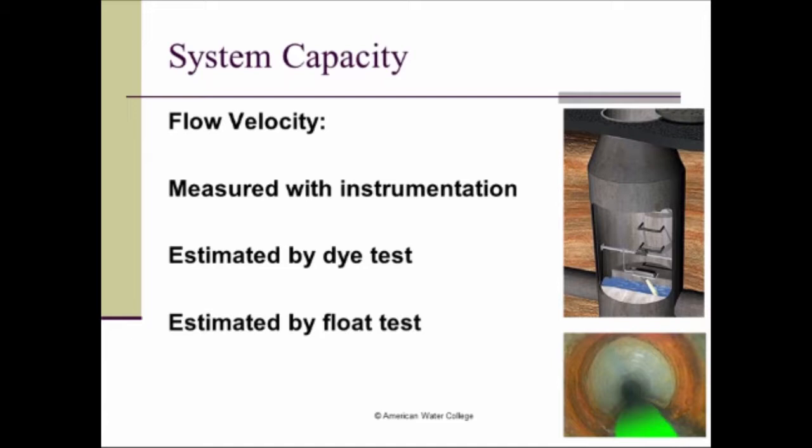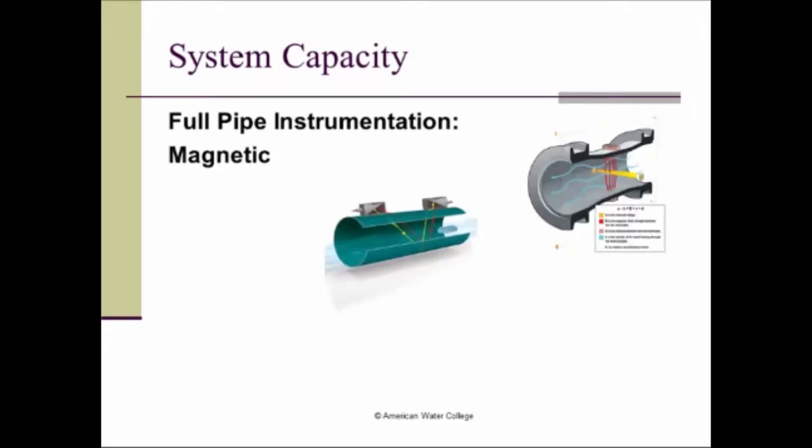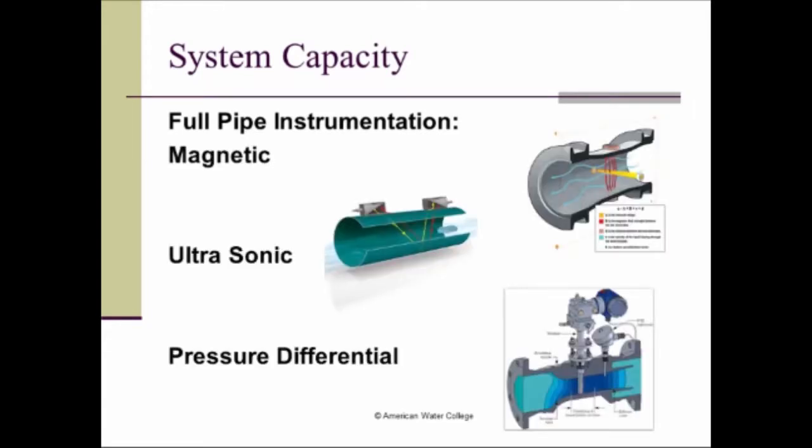Well, if you're going to use instrumentation, there's various types of instrumentation that we can use to measure the velocity of flow in a collection system. And they're differentiated by whether the pipe is full or if it's an open channel flow. So if we're talking about full pipe instrumentation, we're generally talking about force mains, so a pressurized system. And the different methods we can use are magnetic, ultrasonic, and differential pressure.